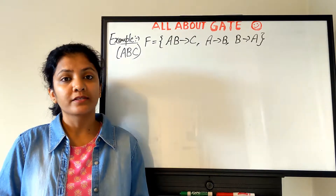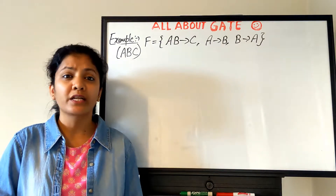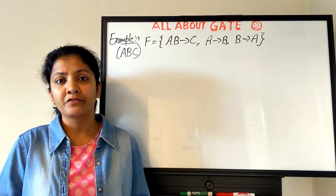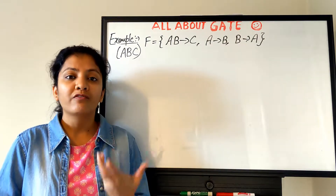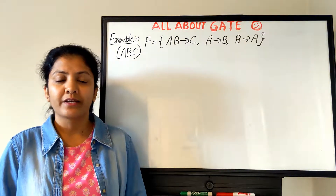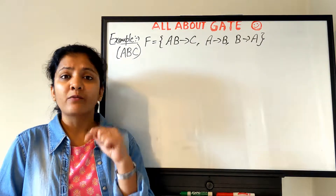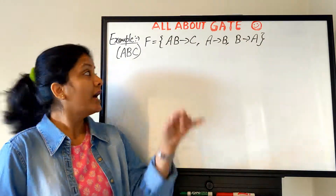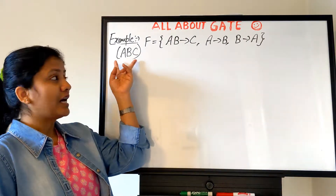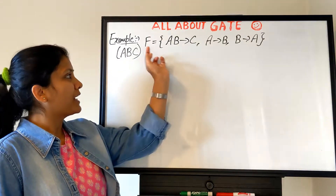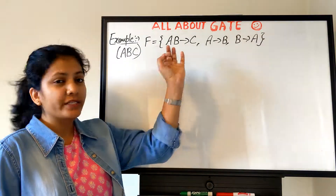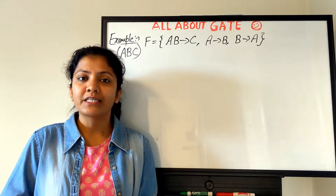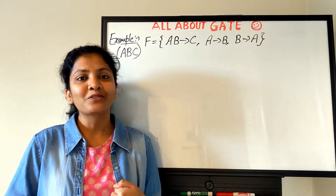Once you have understood the concept of minimal cover — the need for it and how to find it — I want you to pause the video and solve this question by yourself. It's a relation R with attributes A, B, C and a small FD set with only three FDs given. Find the minimal cover, then come back for the solution.